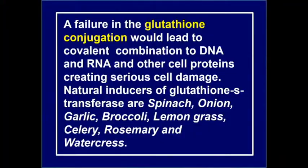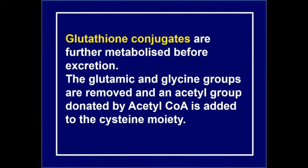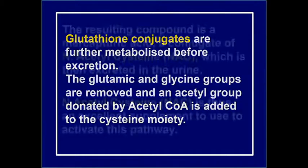Rosemary is a very nice herb, very rich in iodine and a great detoxifier. Garlic, broccoli — remember, be careful with broccoli with certain blood types. Spinach and onion. So glutathione is important because a lot of drugs are metabolized by glutathione.